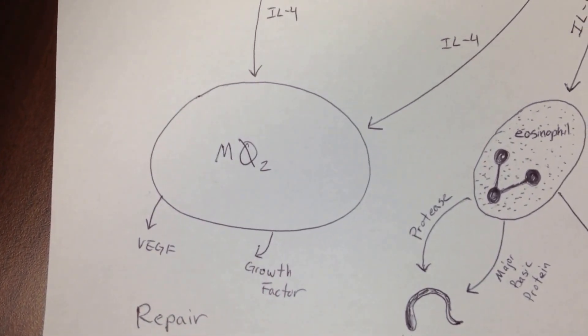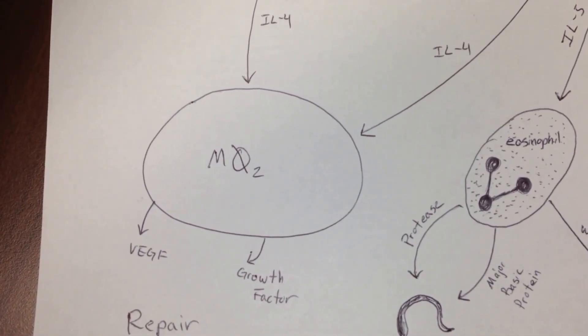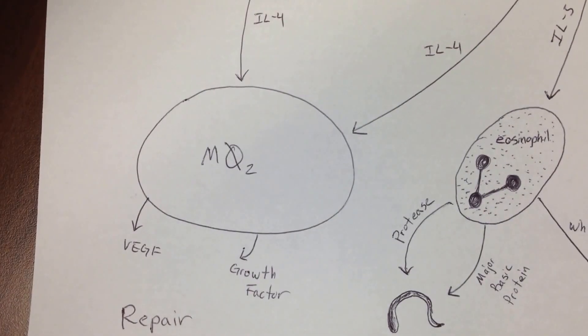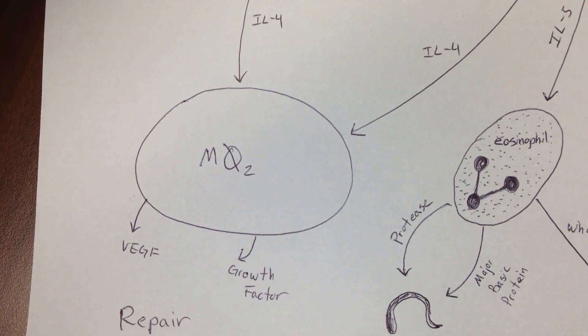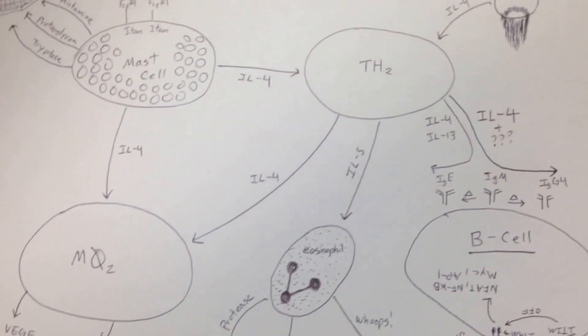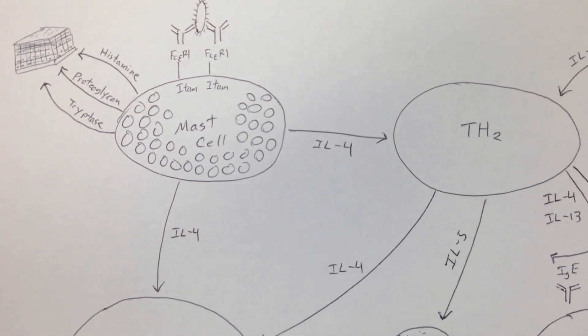What does it do to repair? It can secrete VEGF or growth factor, along with a lot of other things. We'll be getting to that in the future, but if you just wanted to know why it's called the repair macrophage, well, it can secrete those things to help with repair.